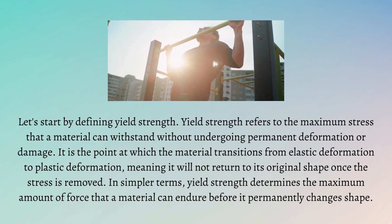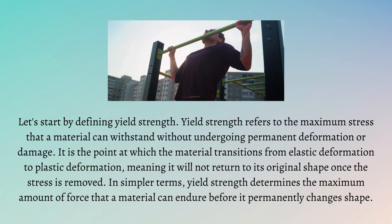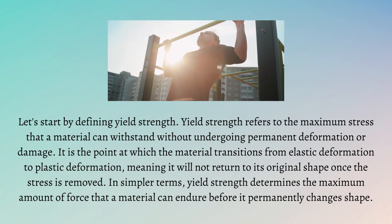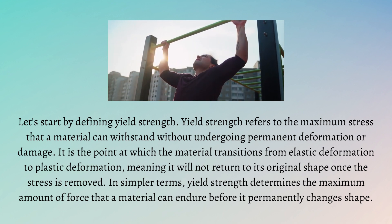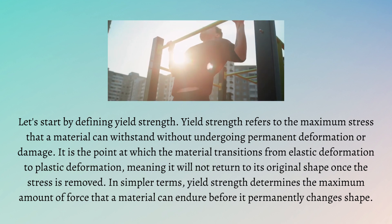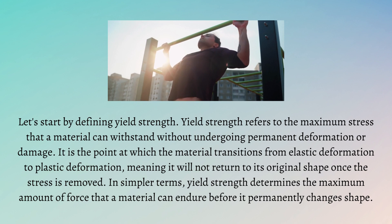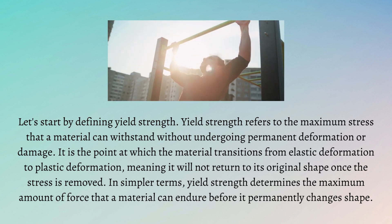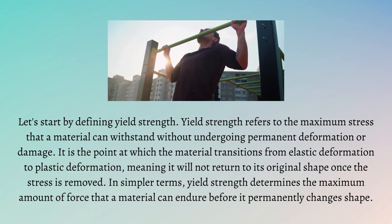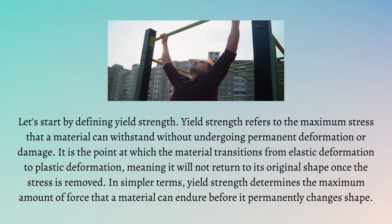Let's start by defining yield strength. Yield strength refers to the maximum stress that a material can withstand without undergoing permanent deformation or damage. It is the point at which the material transitions from elastic deformation to plastic deformation, meaning it will not return to its original shape once the stress is removed. In simpler terms, yield strength determines the maximum amount of force that a material can endure before it permanently changes shape.